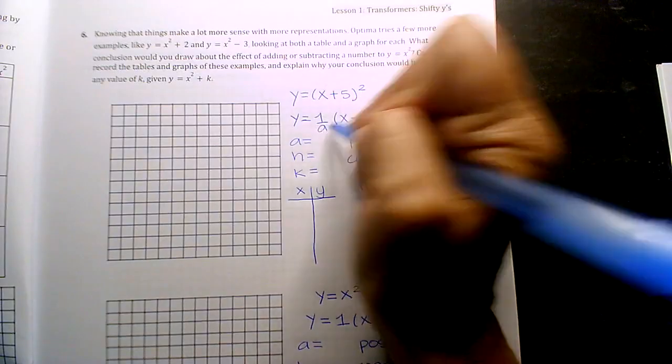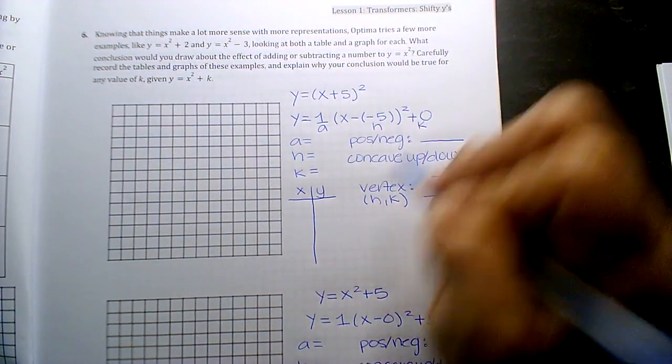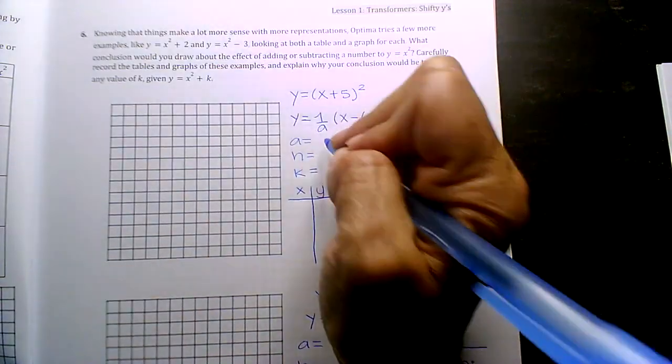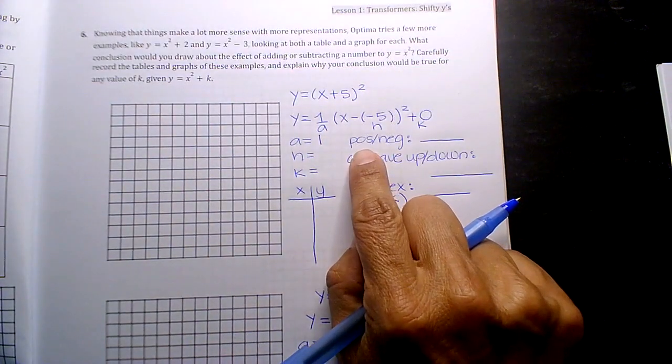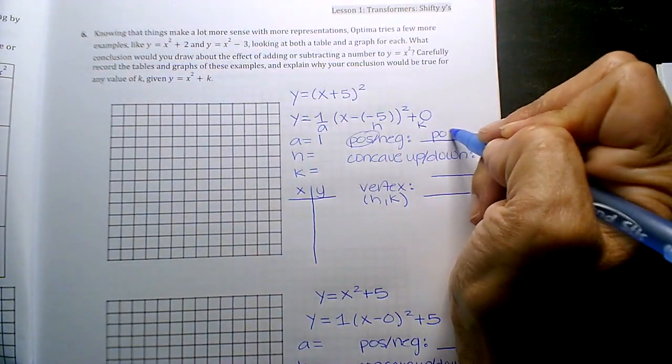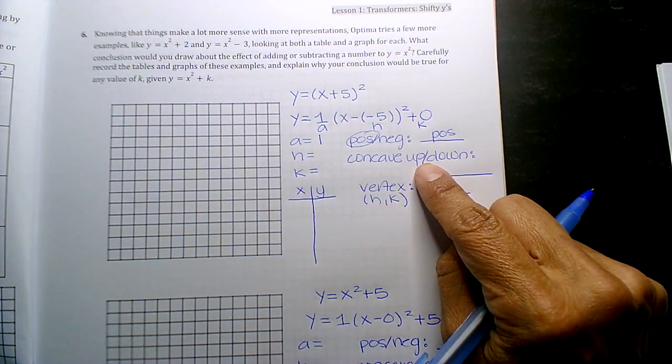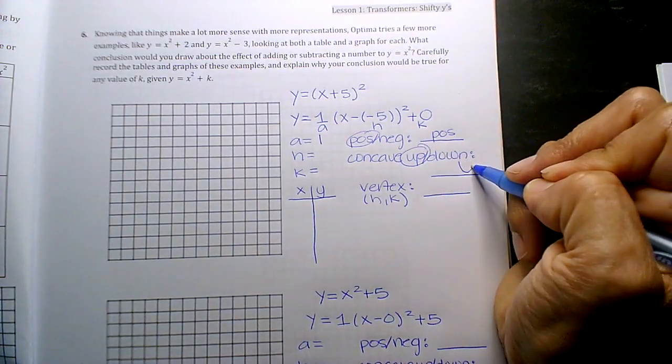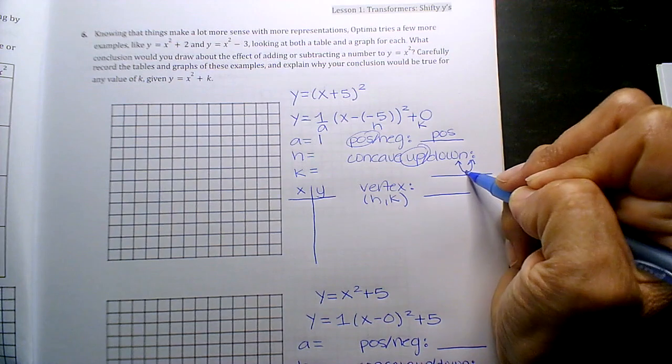Okay, so what's my a value? One. Is that number positive or negative? Positive. So then is it concave up or down? If it's positive, it's concave up always. It's looking like this.